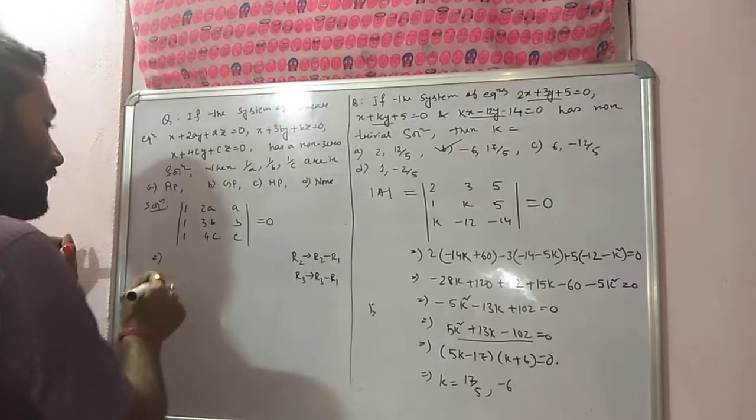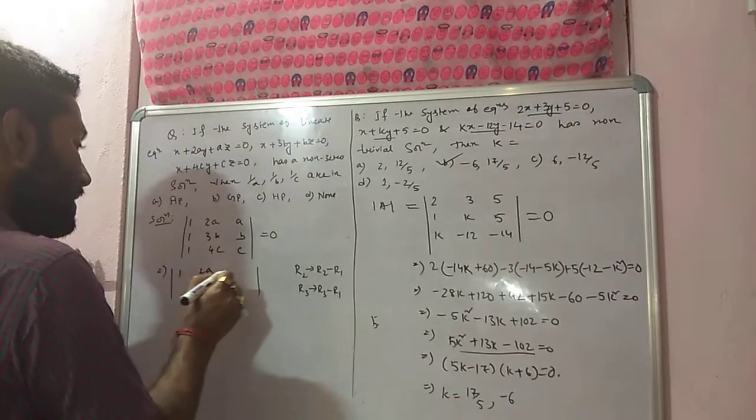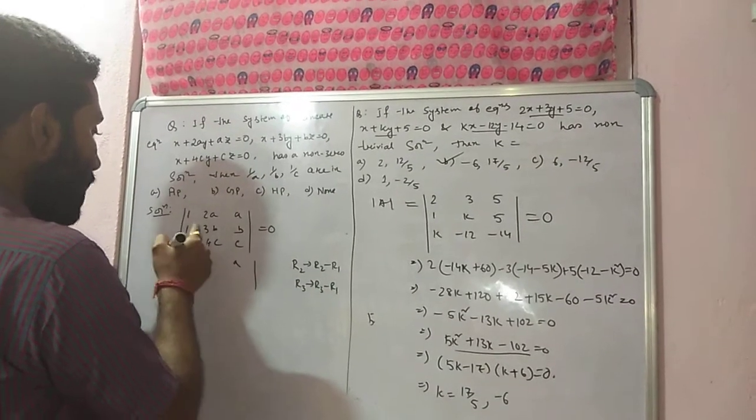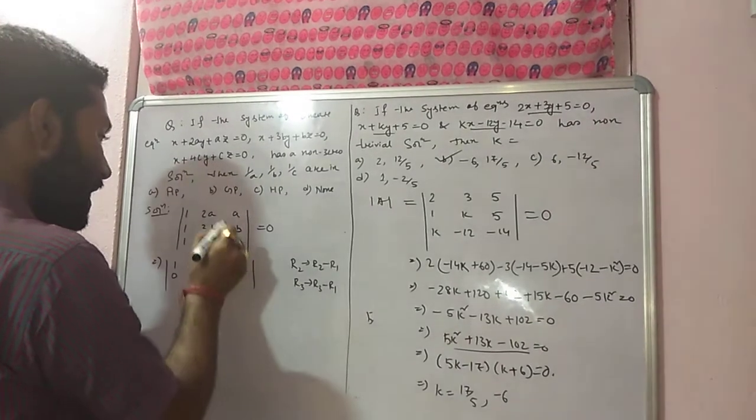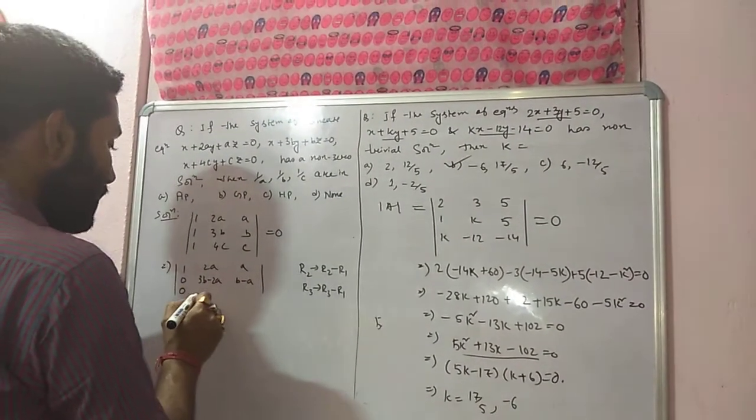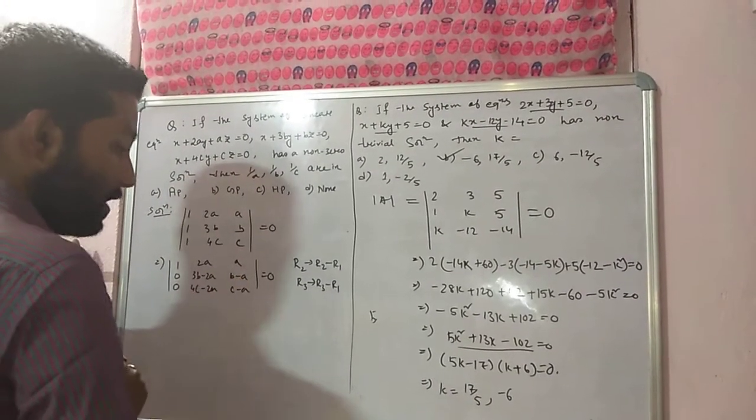First row will remain same: 1, twice A, A. If I use R2 minus R1, it will be 0, 3B minus twice A, B minus A. R3 minus R1 gives 0, 4C minus twice A, C minus A. This is equal to zero.